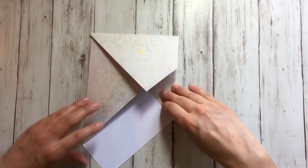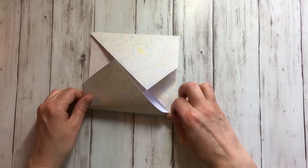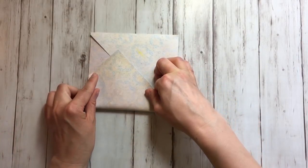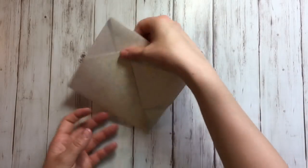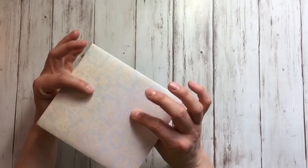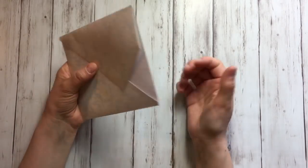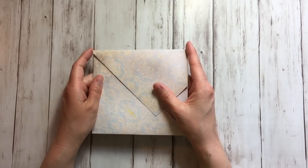And turn it around and do the same on the other side. So about a quarter of an inch upwards. And actually your envelope is quite ready now. You can tape it shut or glue it shut. But I want to make it far more pretty than that, of course.